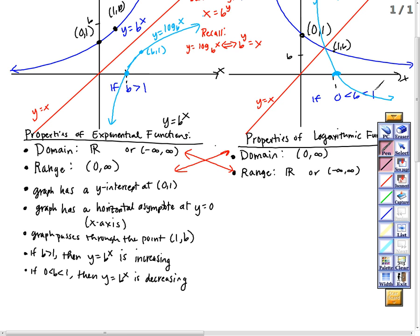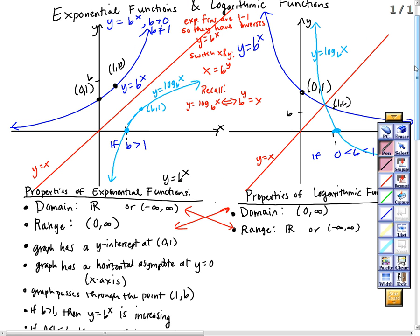If I look at the graph of the logarithm, I see the domain is numbers larger than zero — it's never going to cross this. The range: I'm going to hit every single y value. If I continue this on forever, I will hit every single y value there is.